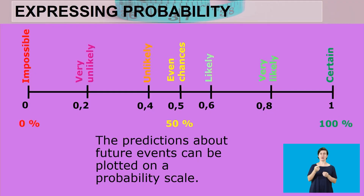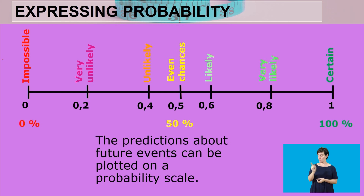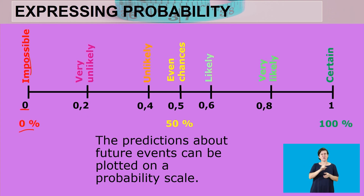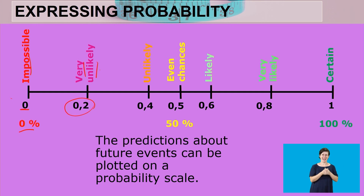A probability scale is used to make these predictions. In words: if the probability is zero, the event is impossible — zero percent chance. If it is very unlikely, we are talking about 0.2, which is 20%. We say it's very unlikely because 20% is much closer to being impossible than to being certain, so the chances of it occurring are very slim.